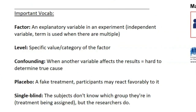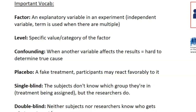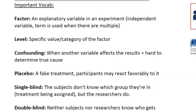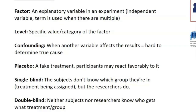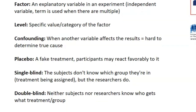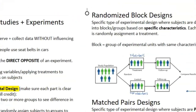A few more key vocab terms: Factor is the explanatory or independent variable — used when there are multiple independent variables. Level is a specific value or category of the factor, for example, 'sunlight' is a factor while 'low sunlight' or 'high sunlight' are levels. Confounding is when another variable affects the results, making it hard to determine the true cause. Placebo is a fake treatment where participants may react favorably. Single blind is when subjects don't know which group they're in, but the researchers do. Double blind is when neither subjects nor researchers know who gets what treatment or is assigned to what group.